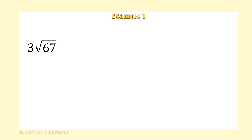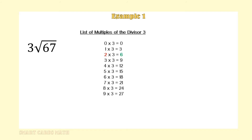Let's look at this example: 67 divided by 3. First, make a list of multiples of the divisor. Next, we ask ourselves: can we get a group of 3 out of 6, which is the first digit in the dividend? The answer is yes. At most, how many groups of 3? Looking at the list of multiples of 3, we can get at most 2 groups of 3 out of 6.